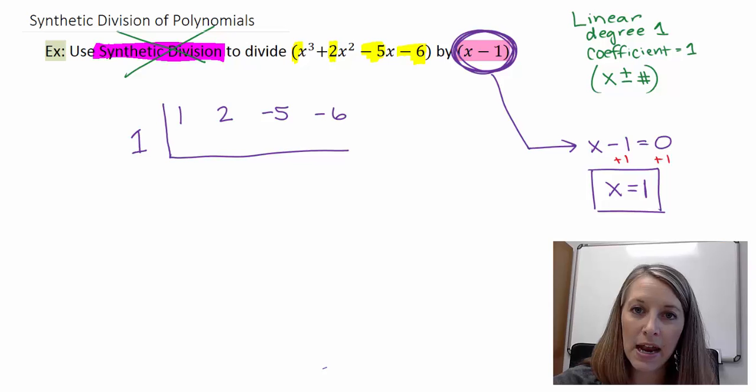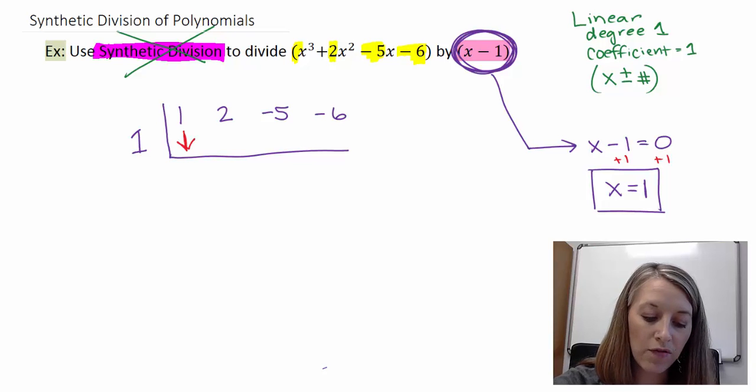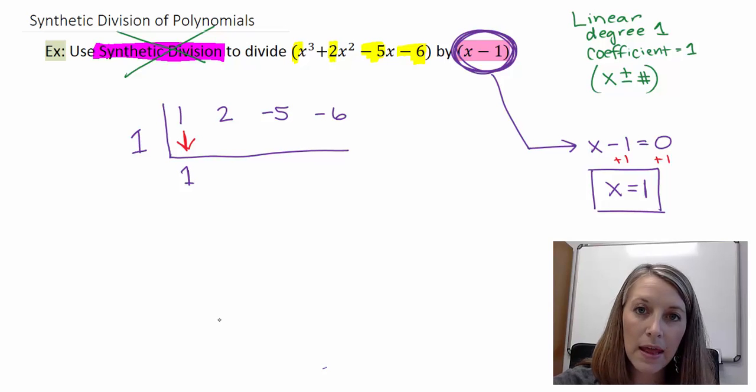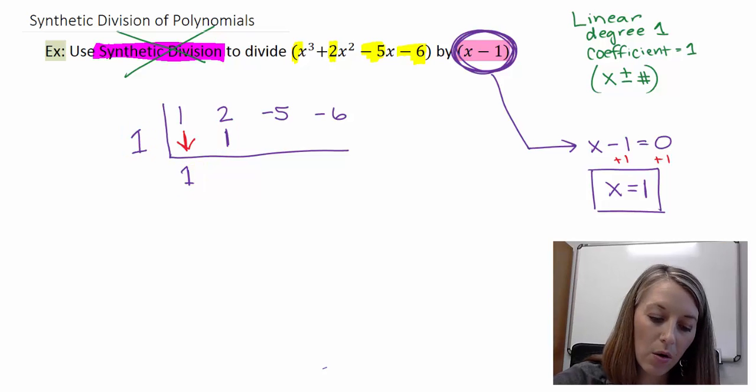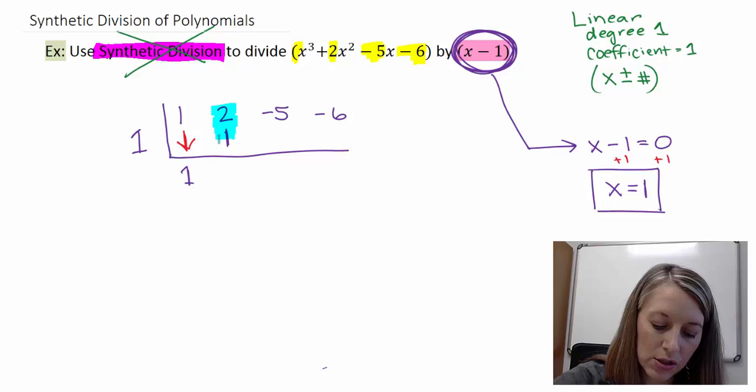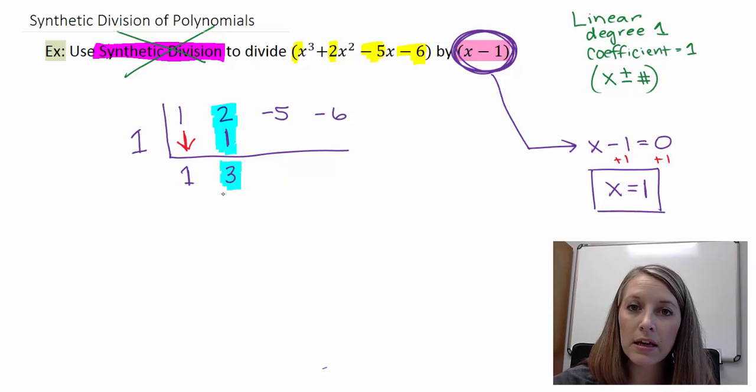Now that we have it set up, you can see how easy our synthetic division process is going to be. The very first thing that you do is just bring down your first digit. So I just bring down my 1 here, and then you multiply. So I multiply 1 times 1, and that goes in this spot here. 1 times 1 gives me 1. Now what we do is we add these two numbers here. 2 plus 1 gives me 3. And then your process, just like it did in long division, repeats. So you're going to do the same process over and over again.